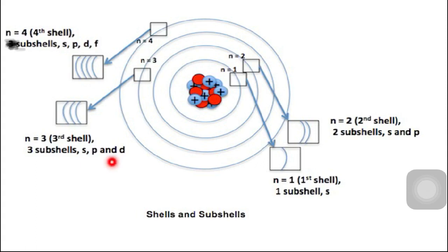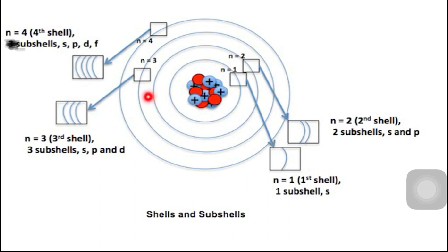This diagram shows the shells and sub-shells. In the center of the atomic structure, the nucleus is present. Around it, n1 is the first shell, made up of only one sub-shell: S. n2 is the second shell with two sub-shells: S and P. n3 is the third shell with three sub-shells: S, P, and D. n4 is the fourth shell with four sub-shells: S, P, D, and F.